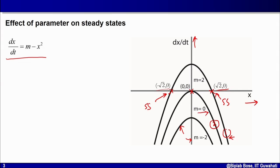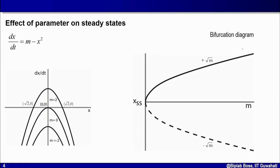There is a better way to represent the effect of parameter m on the possible steady states. This is called a bifurcation diagram. In a bifurcation diagram, you take the parameter affecting the system — in this case, m — on the horizontal axis, and the steady state values of the dependent variable x on the vertical axis, and plot the curves representing the number of possible steady states.